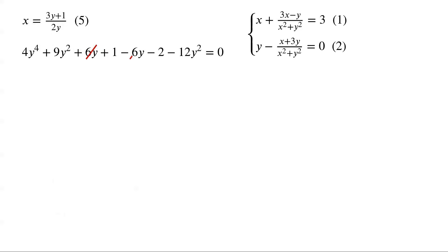6y and negative 6y cancel. 9y squared minus 12y squared equals negative 3y squared, and 1 minus 2 equals negative 1. So the equation becomes 4y to the power 4 minus 3y squared minus 1 equals 0.